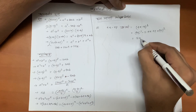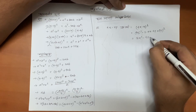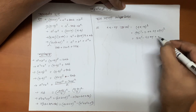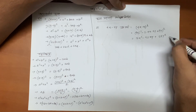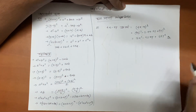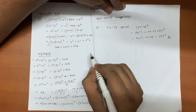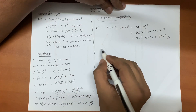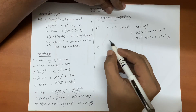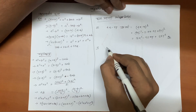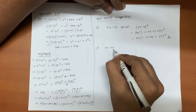This is equal to 16x square minus 40xy plus 25y square, and then this is the answer. This is the answer: 4x minus 5y.